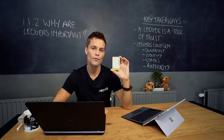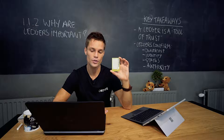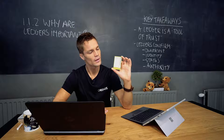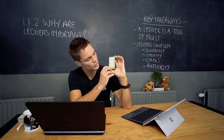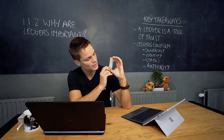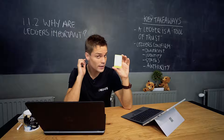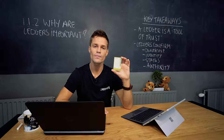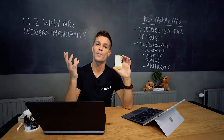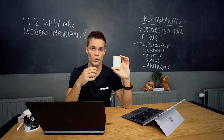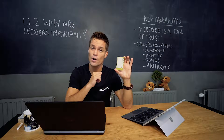First of all, ledgers confirm ownership and ledgers confirm identity. On this pass there is a unique identity number — in my case it starts with 5-4 and ends with an 8. So if I enter this number in the ledger, my name will pop up. If I lost my card, people will know that Jordi Jansen is the owner of this card.